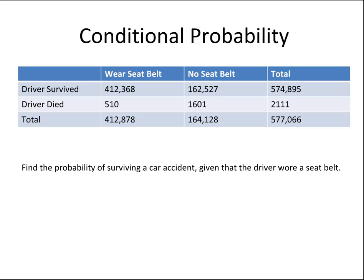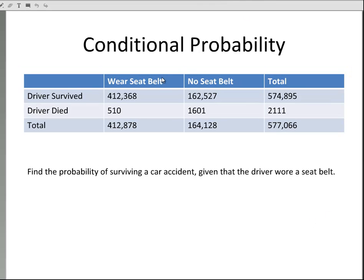The question is: find the probability of surviving a car accident given that the driver wore a seat belt. The given part is right here — given that the driver wore a seat belt. So we need to look at the column for wearing a seat belt, which would be this column here.